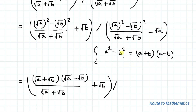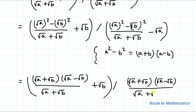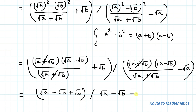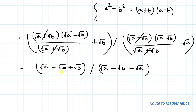Similarly, we apply this algebraic identity to the second part as well. So we get (root a plus root b) multiplied with (root a minus root b). After applying the identity, the first part simplifies to (root a minus root b) plus root b, and the second part simplifies to (root a minus root b) minus root b, whole divided by (root a plus root b).